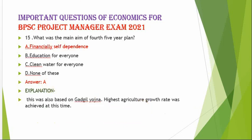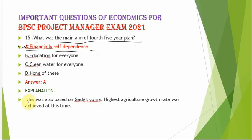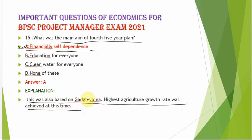The next question is: what was the main aim of the Fourth Five Year Plan? The correct option is option A — financial self-dependence. This plan was also based on the Gadgil Yojana. The highest agriculture growth rate was achieved during this period.